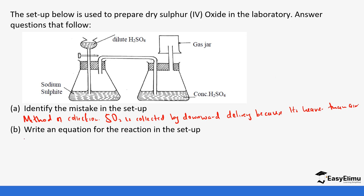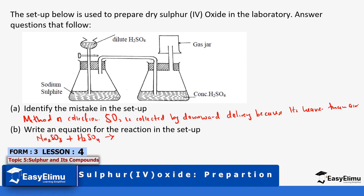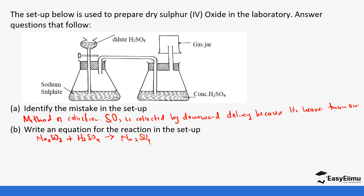The next question: write an equation for the reaction in the setup. The reaction of sodium sulfite plus sulfuric acid forms sodium sulfate, sulfur dioxide, and water. Adding state symbols: sodium sulfite is aqueous, sulfuric acid is aqueous, sodium sulfate is aqueous, sulfur dioxide is gaseous, and water is liquid. Checking balance: two sodiums each side, two sulfurs each side, and seven oxygens each side — the equation is balanced.